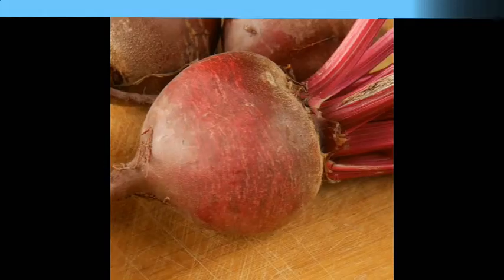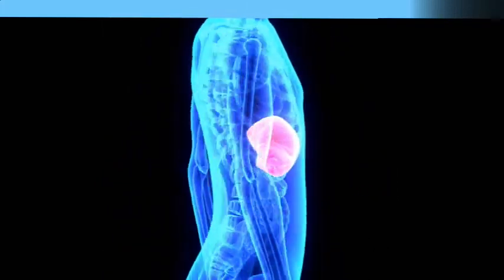Beets. Beets are really important too. So beets really do have a profound effect on gallbladder function, but they can also improve liver function as well.